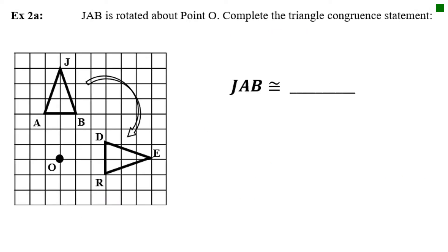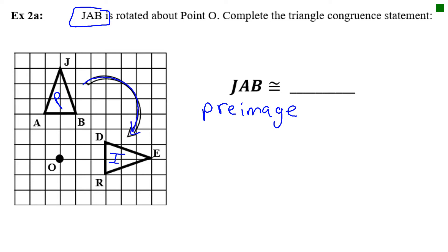Example 2: Triangle JAV is rotated about point O. Complete the triangle. JAV must be the pre-image. On the graph you can put a P for pre-image, which means the other one is the image. You can see the triangle with an arrow telling you it's been rotated to the right. This time they didn't tell us in words what direction, but from the picture you can tell it rotated to the right, which is clockwise.